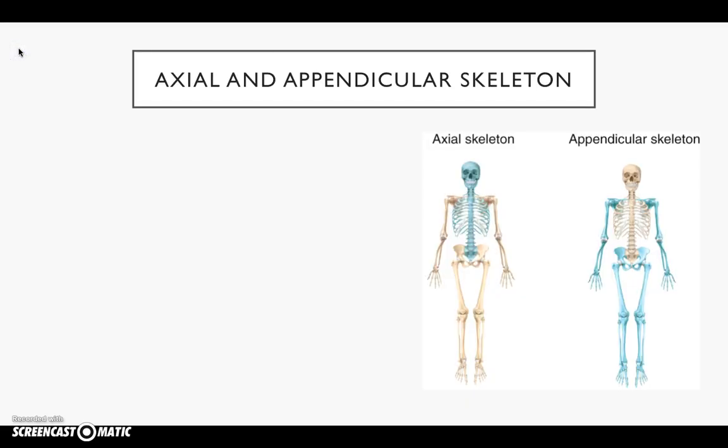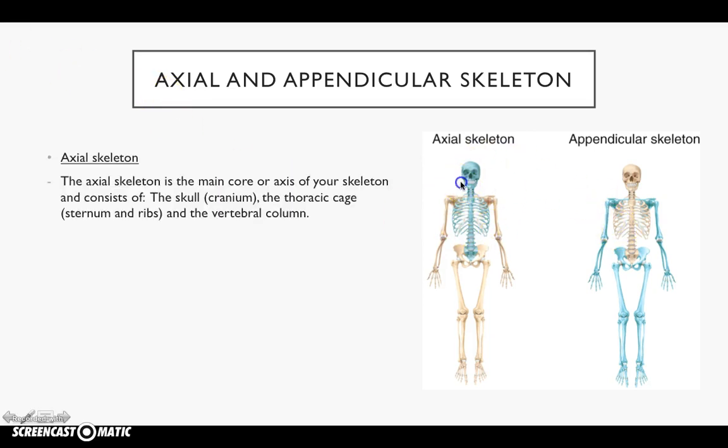The axial and appendicular skeleton. As you can see on the right hand side, we've got a diagram here. The axial skeleton is the main core or axis of your skeleton and consists of the skull, your cranium, the thoracic cage, your sternum and ribs, and the vertebral column. This part in blue is your axial skeleton, i.e. the centre, the base, the body of your skeleton.